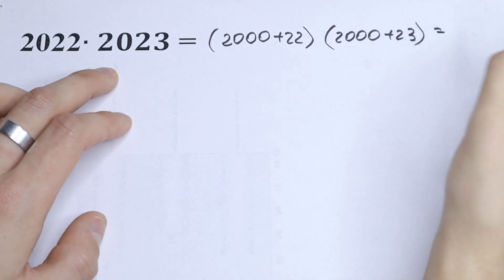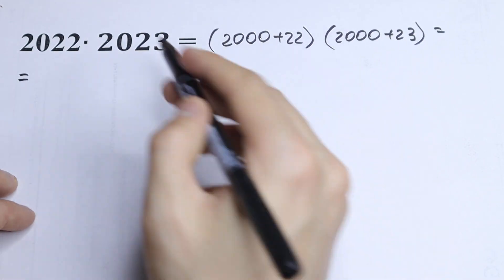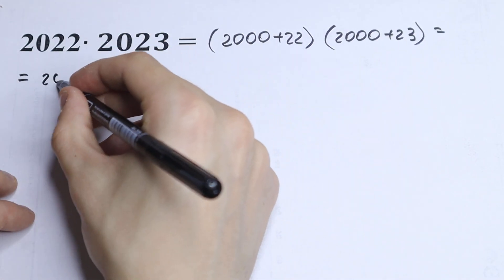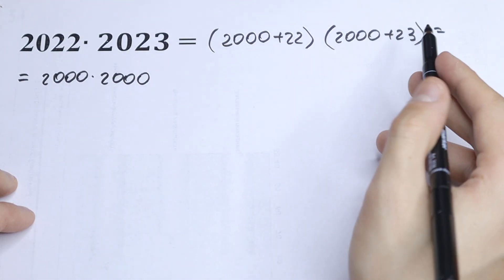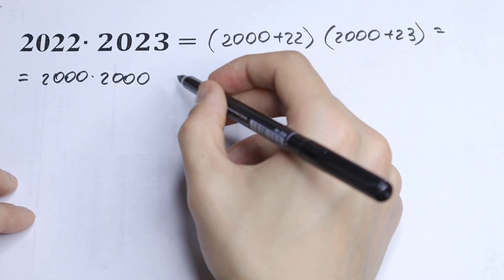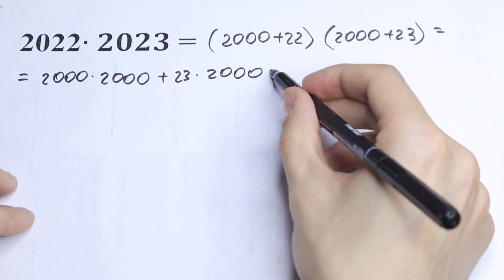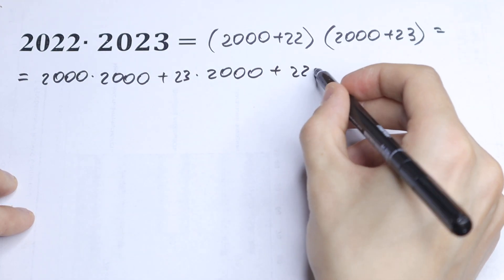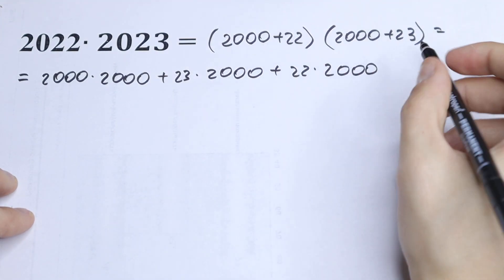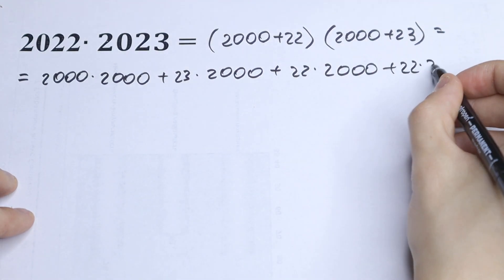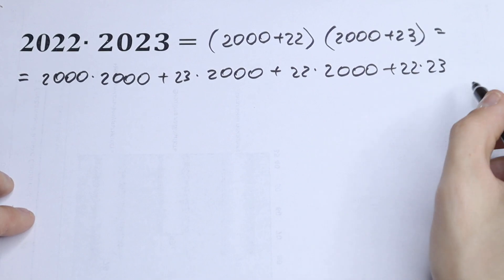So let's multiply our expressions. As a result we will have 2000 times 2000, plus 23 times 2000, plus 22 times 2000, and the last term: 22 times 23. Nothing hard, just multiplying our expressions using classic rules.